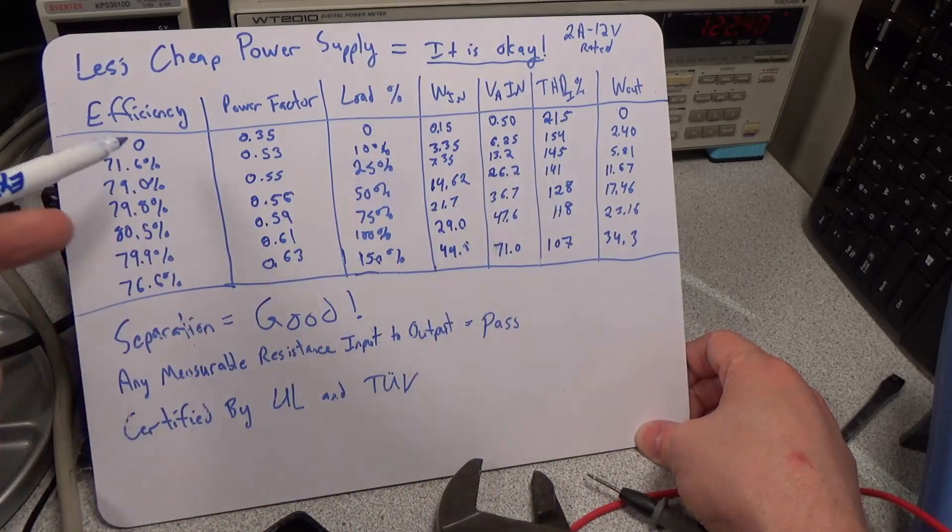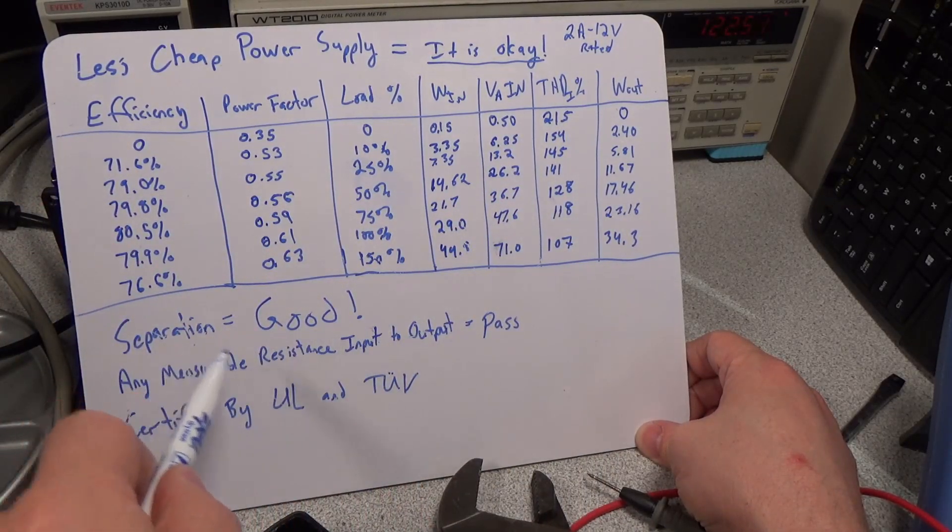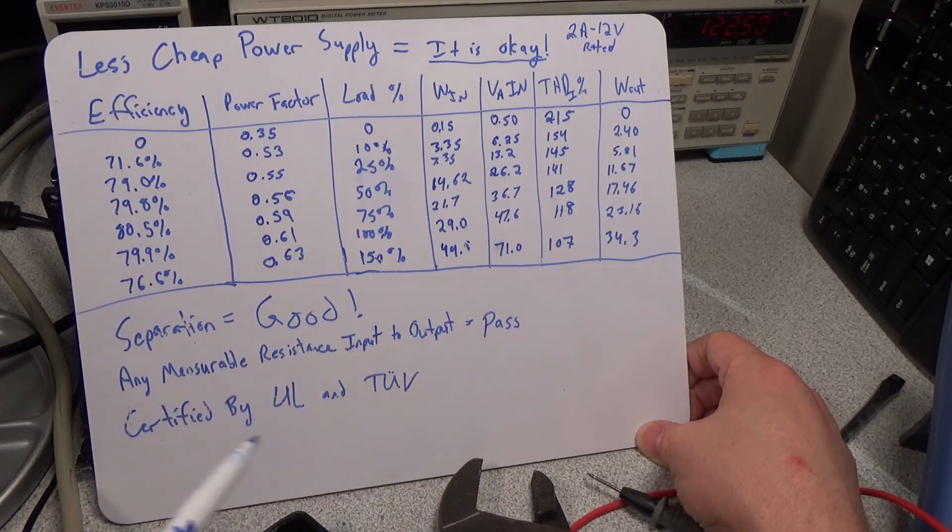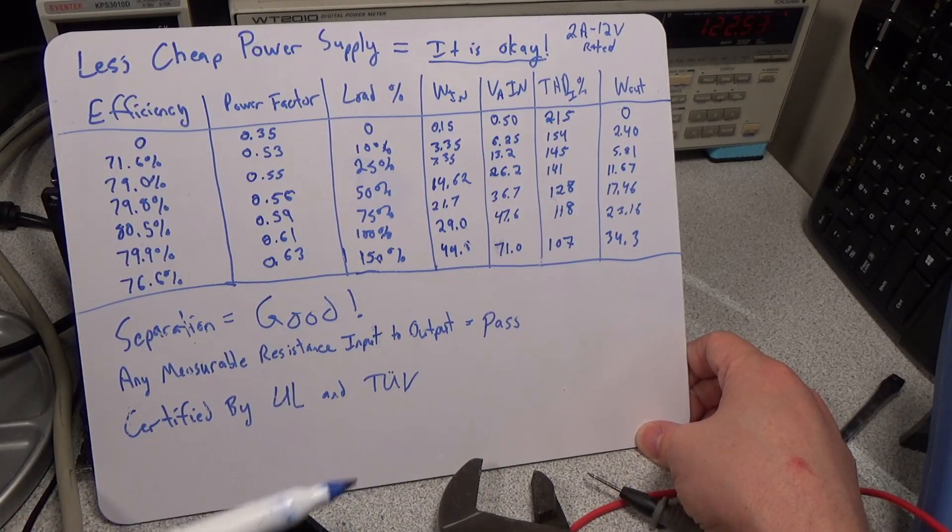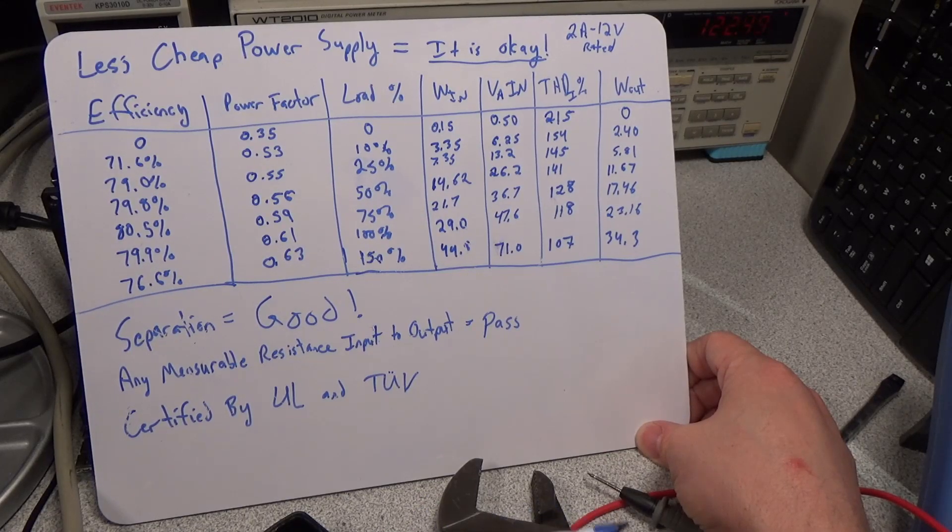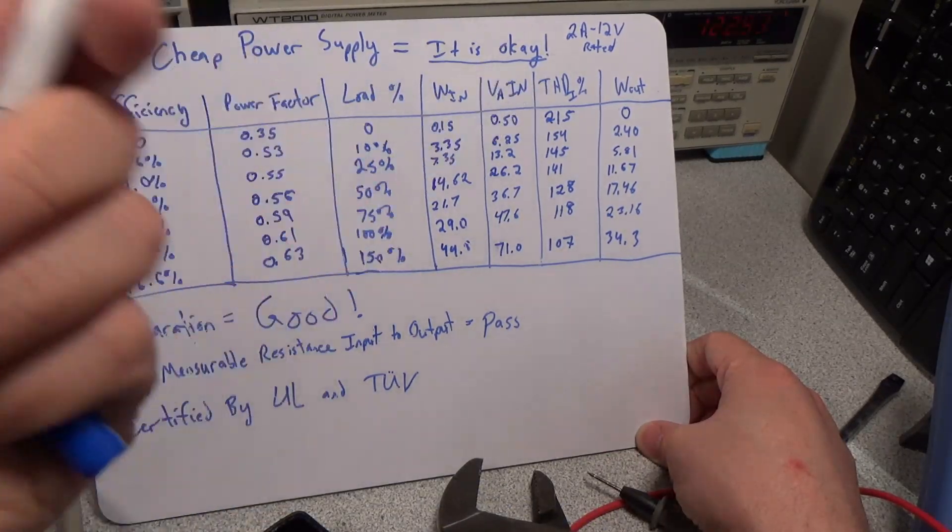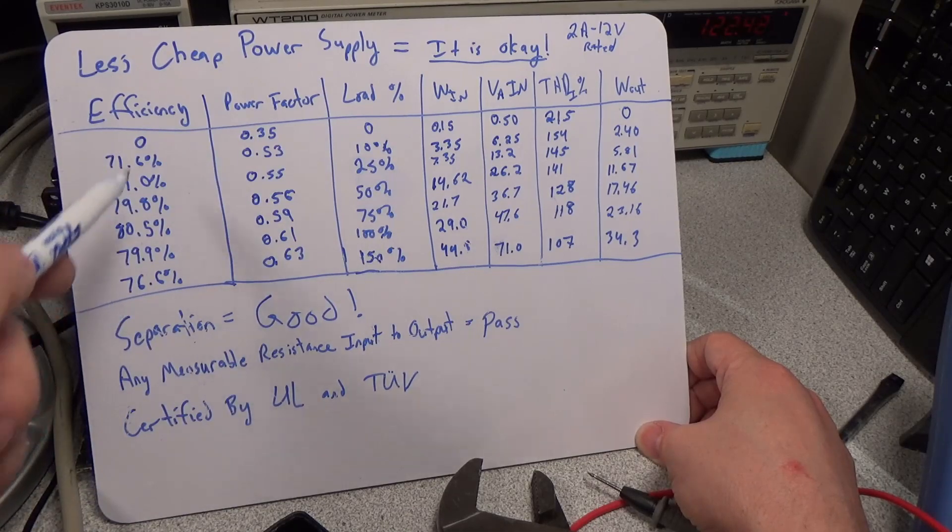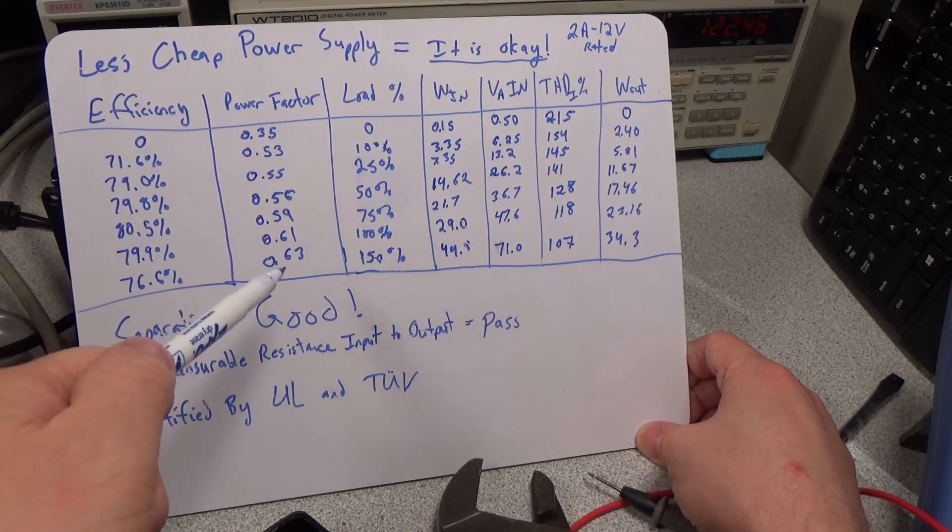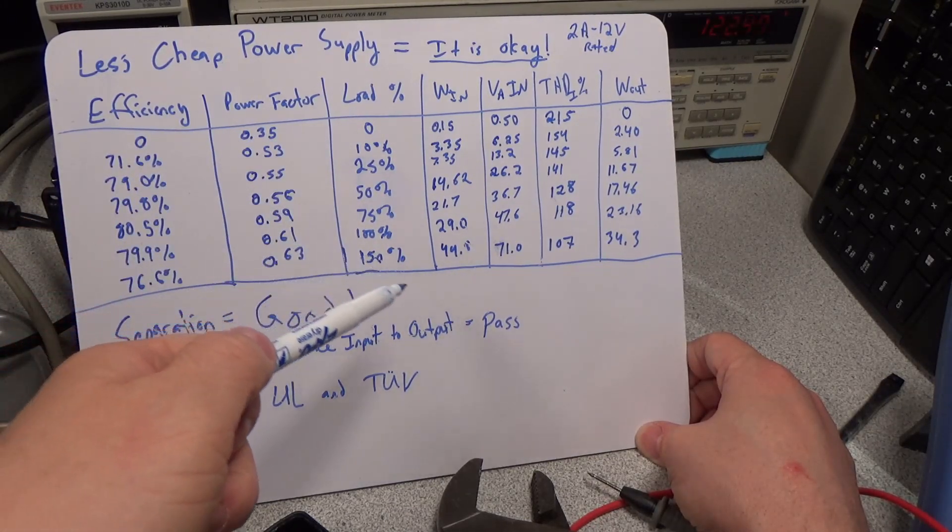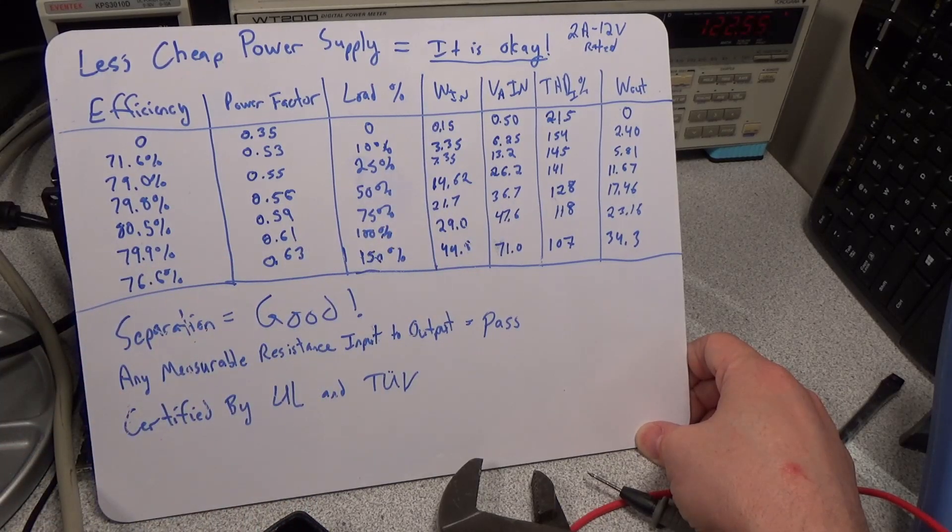So this isn't perfect either, but that's our example of a kind of a mid-tier, a little bit inexpensive but also a very good power supply. Overall you have your good separation on your transformer, you have a pass on the measurable resistance between the input and output, and you have it certified by UL and TUV. It's got all the requisite safety components inside. The efficiency is a little bit better. The power factor is not great because of the type of power supply this is. It did go up to the 150% rated load as well.